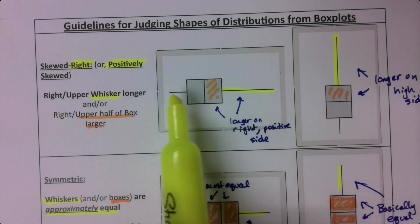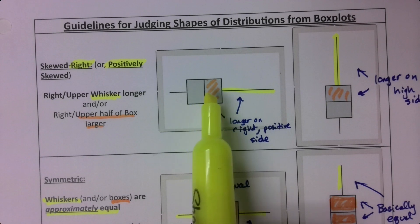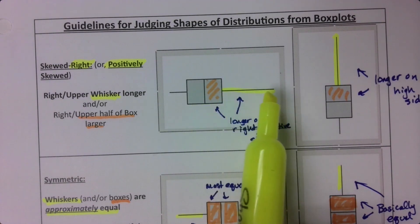Which is what's happening up here. That whisker is way longer than that whisker. And that's winning out over the fact that the boxes are equal. If the boxes say symmetric, but the whiskers say skewed, that's skewed.